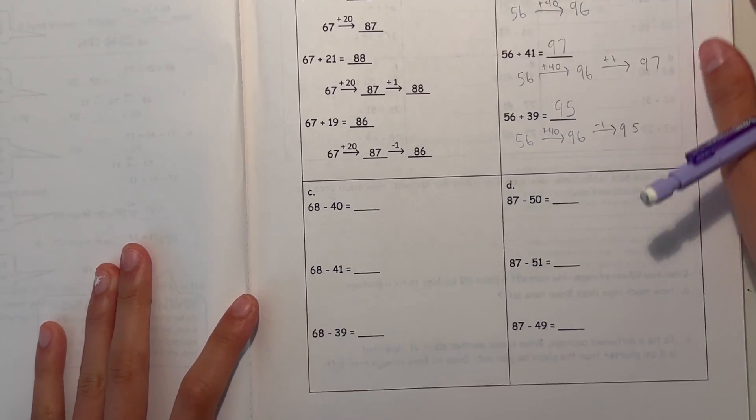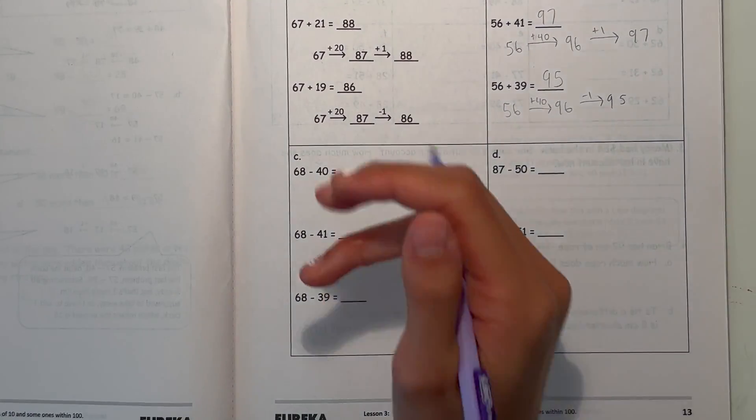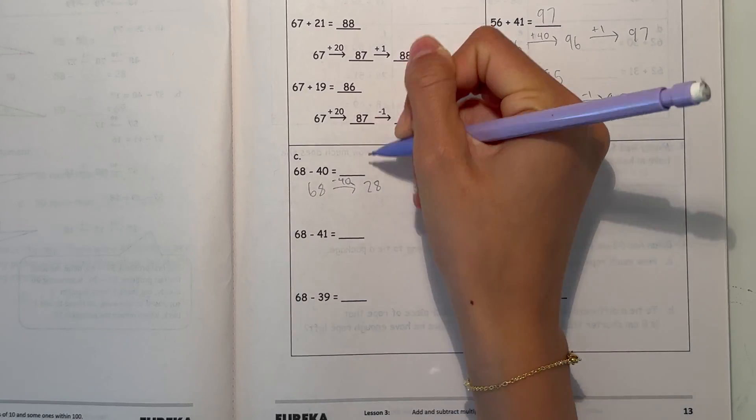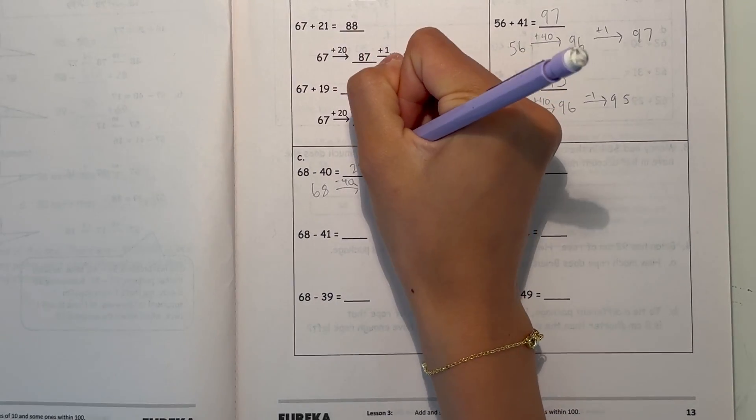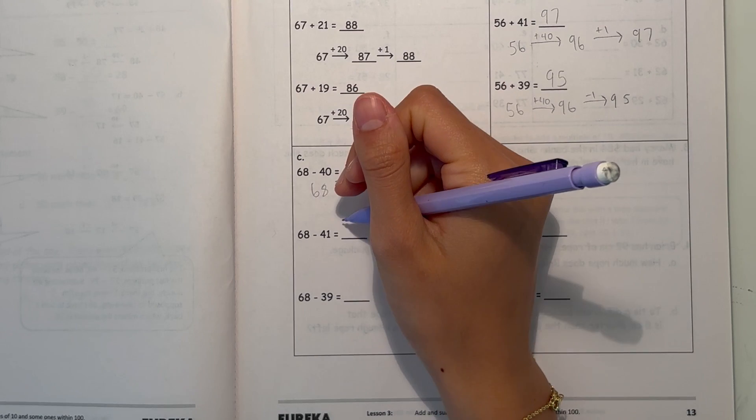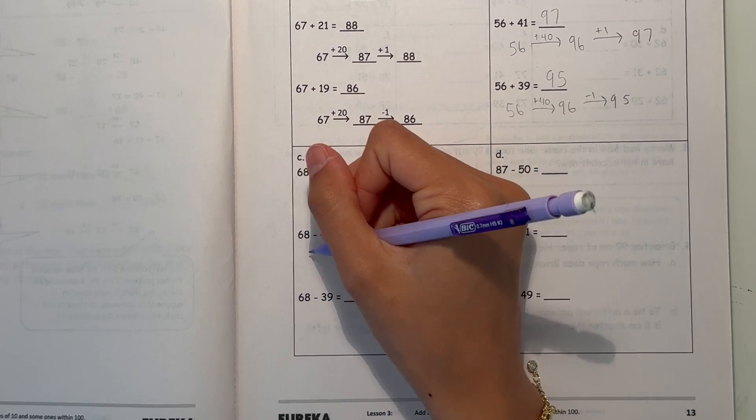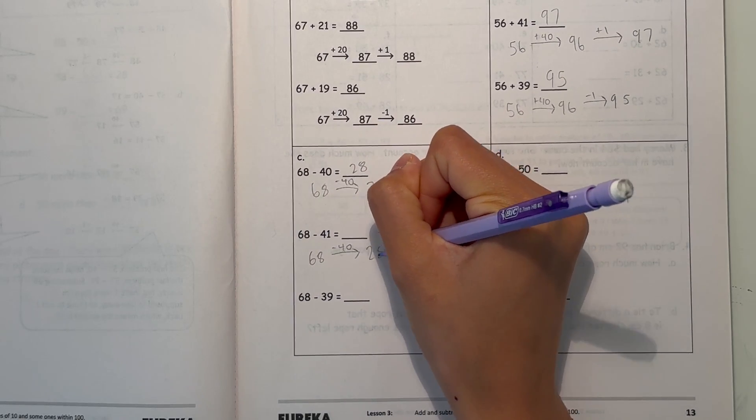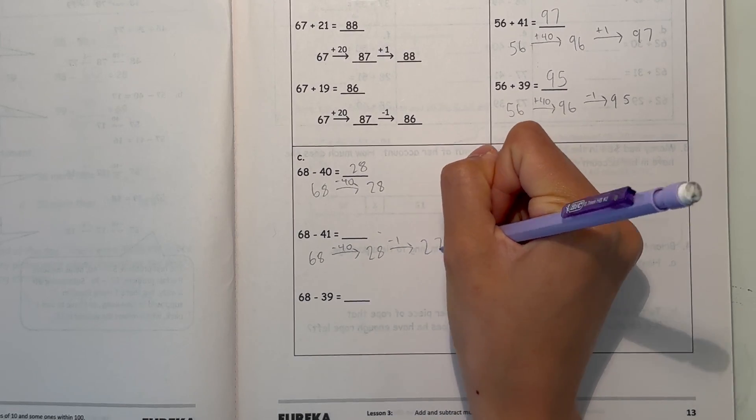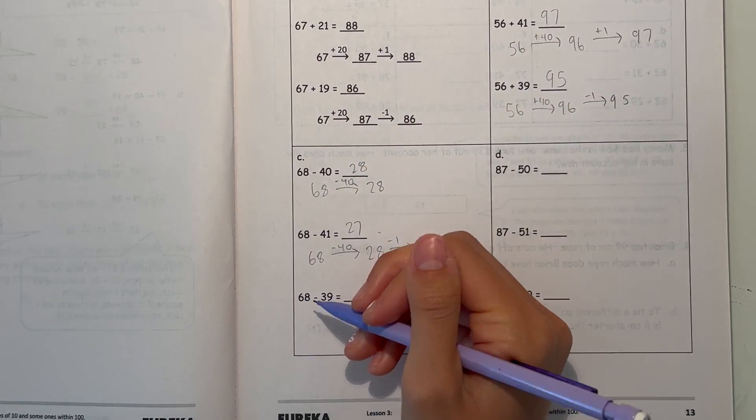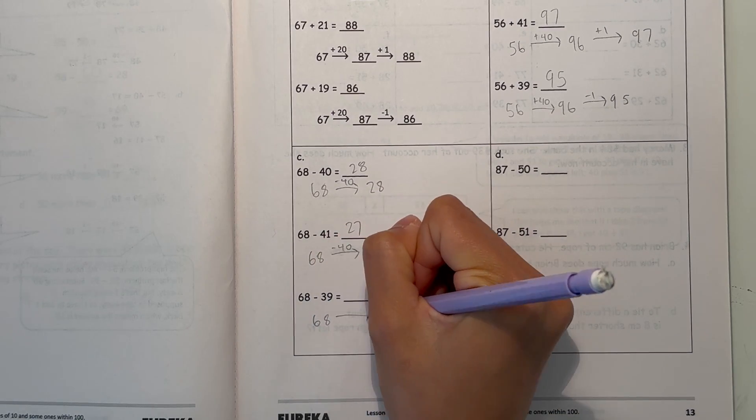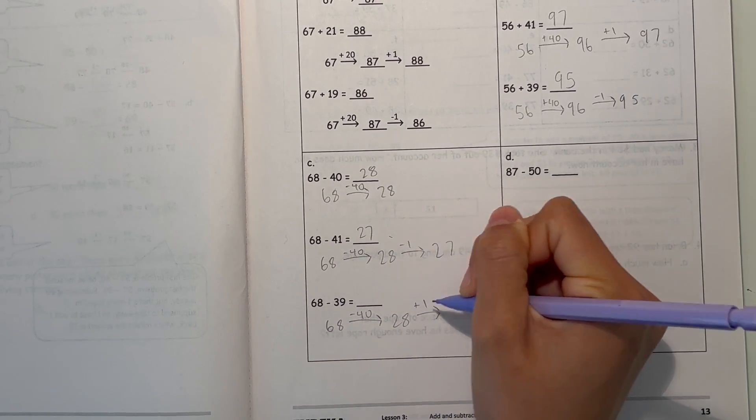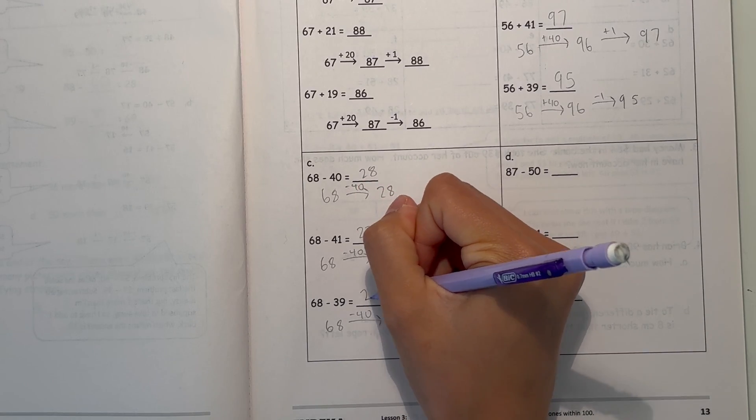Now C. 68 minus 40, just minus 40, which is 28. 68 minus 41, first minus 40, which is 28, and then minus 1, which is 27. And 68 minus 39, so that makes 29.